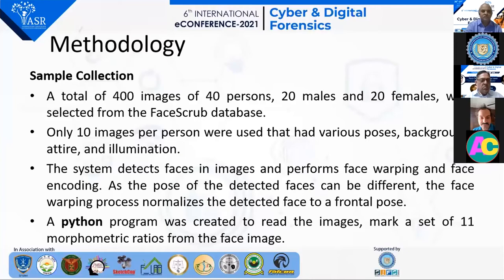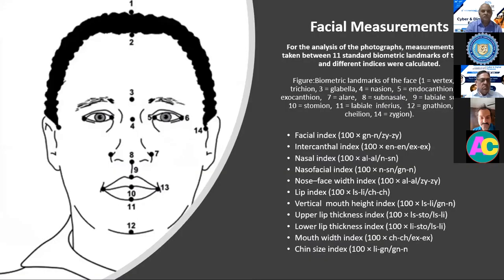We introduced a Python program to read the images and mark a set of 11 morphometric ratios from facial images. These are the facial landmarks. For the analysis of photographs, measurements were taken between 11 standard biometric landmarks of the face, and different indices were calculated on the basis of these landmarks.